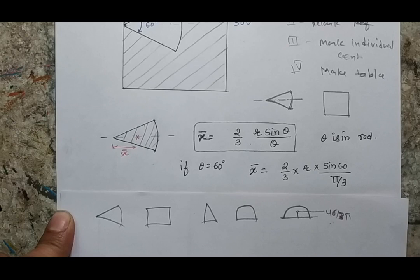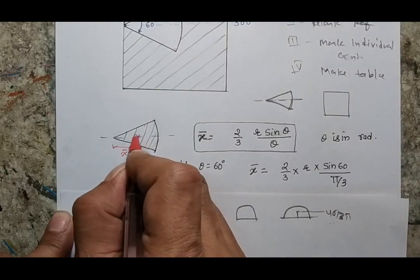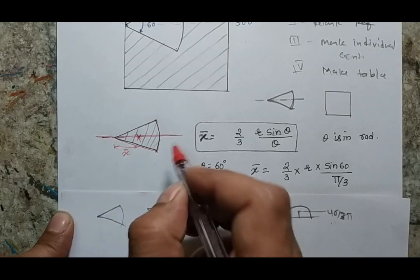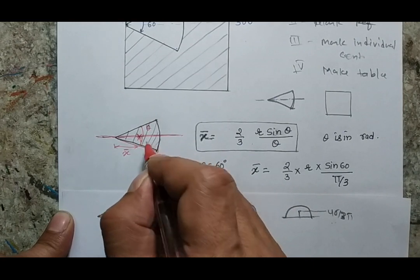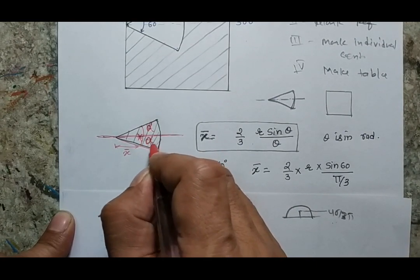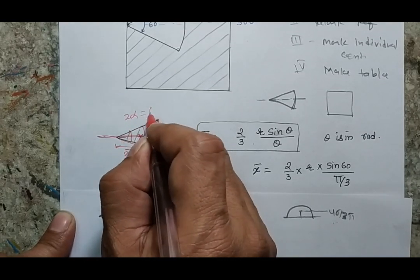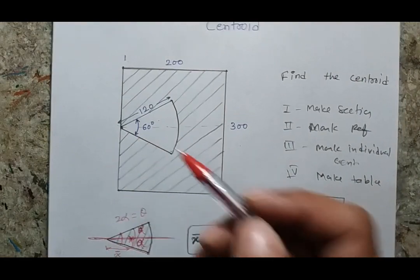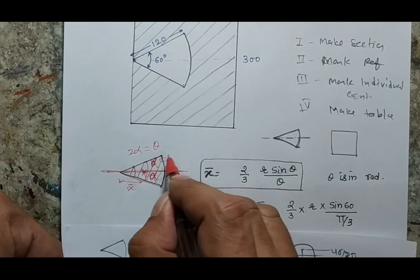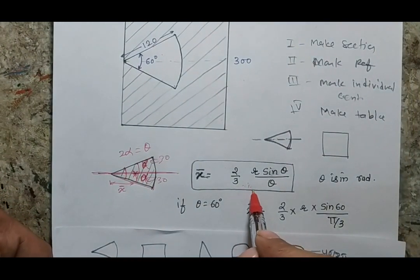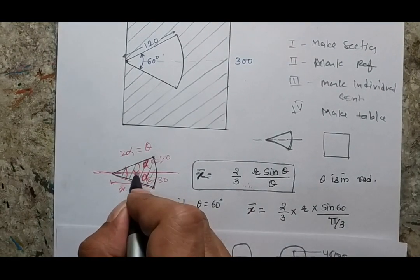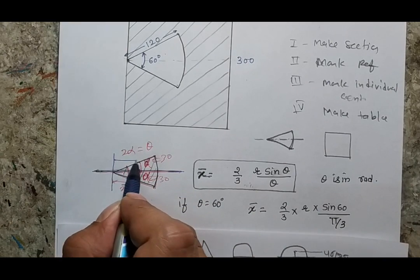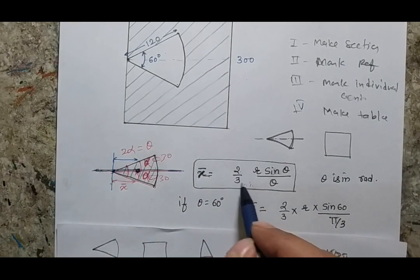In the case of a body which is a part of a circle, I am placing the body so it is symmetric about the horizontal axis. The angle at the top and bottom sides are equal — let each be alpha, making the total angle 2α or theta. In our question, the angle is 60 degrees, so alpha will be 30 degrees on each side. The formula for the centroid position from the vertex is 2/3 × r × sin(θ)/θ.